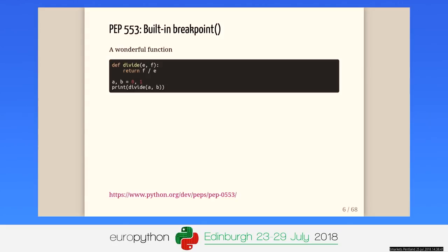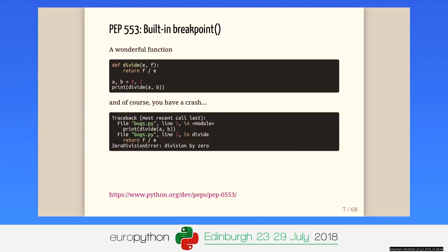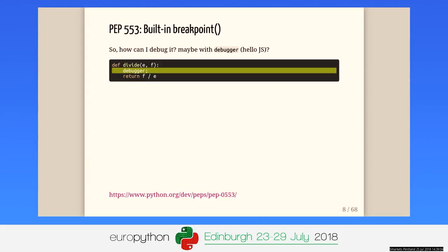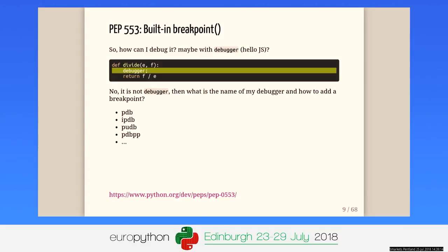The breakpoint. When you want to start to debug your software, usually you have this kind of code. I know that the code will give this kind of error — divide by zero is just forbidden. If I would like to debug it, I have two solutions: firstly, I'm going to use the print function. And we could use the debugger keyword from JavaScript? No. I'm not with JavaScript, just with Python. And with Python, we can have a lot of debuggers.